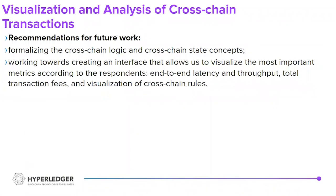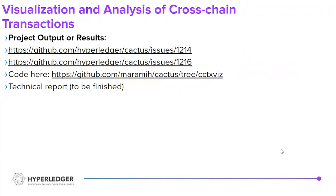Recommendations for future work include formalizing the cross-chain logic and cross-chain state concepts, and working towards creating an interface that allows us to visualize the most important metrics according to the respondents — analyzing latency and throughput, total transaction fees, and visualization of cross-chain transaction rules. The code can be found at the provided link, and the technical report will be finished soon and will be published.